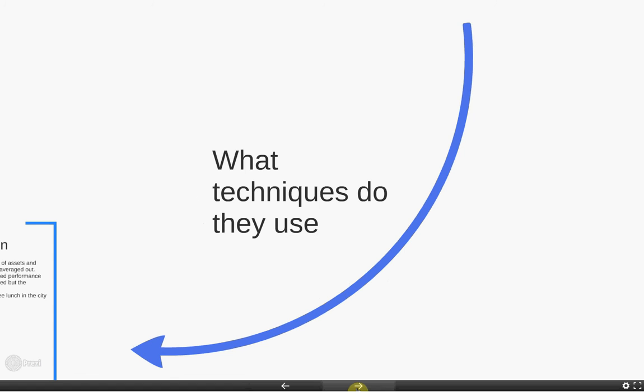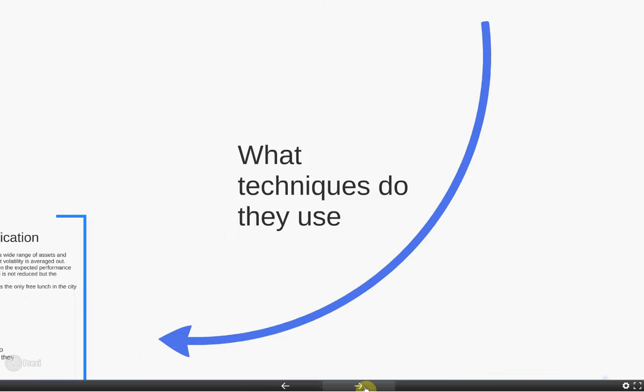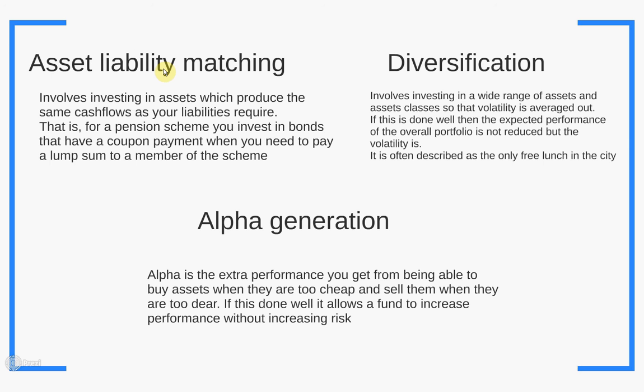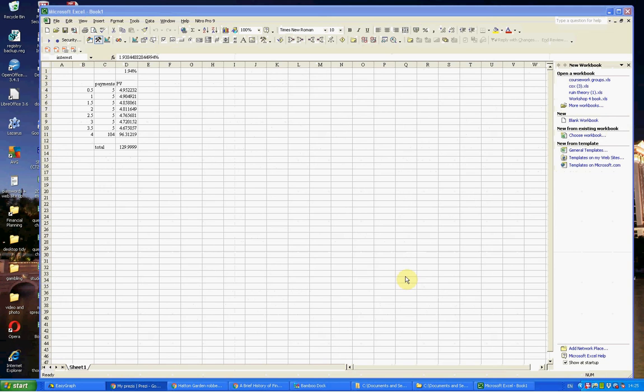What techniques do fund managers use when evaluating what stocks and shares are actually worth? There are lots of different types — you could spend your whole life on this, and if you're a fund manager, this is really your whole life: alpha generation. But there are different areas. Asset-liability matching is one: it's all about getting the cash flows generated by the assets to match the cash flows produced by the liabilities. Let's look at that pictorially.